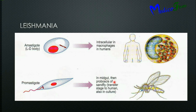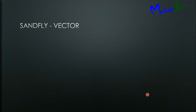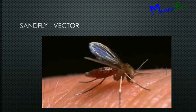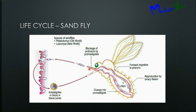The promastigoid form is found in the midgut of the sandfly, then passes to the proboscis. The sandfly vector bites the human skin. During blood meal, the sandfly's proboscis is blocked by promastigoids, so they regurgitate while feeding and aspirate amastigoids from blood or tissue juice. These go to the midgut and transform into promastigoids, reproduced by binary fission, then pass to the pharynx and reach the proboscis. This entire process takes 7 days and is known as the extrinsic incubation period.